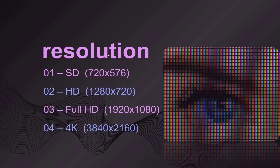The more squares we have, the better the resolution, and the better the resolution, the clearer and higher quality the final image. SD is 720×576, HD is 1280×720, Full HD is 1920×1080, and 4K is 3840×2160.